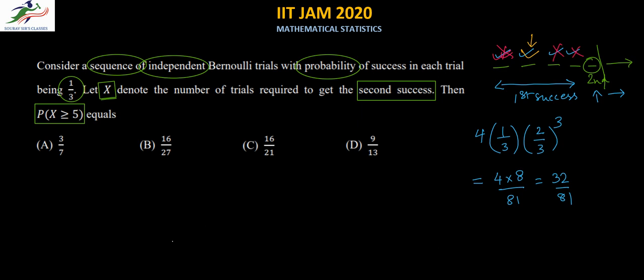Which is, they considered the first four trials, they considered the probability of one success correctly, but they incorrectly considered the probability of failure for two trials instead of three. So if you do that, then it becomes four into one third into two by three, and that comes out to be 16 by 27, which is option B, and which in this case erroneously is the correct answer, but the actual answer should be 32 by 81.